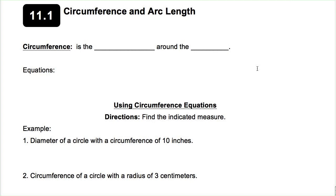Today we start the last chapter — potentially. We started to deal with chapter 11, dealing with area and volume. The first thing we're going to talk about is circumference and arc length.